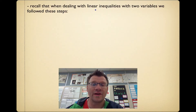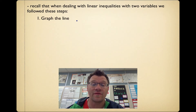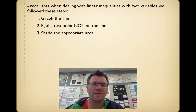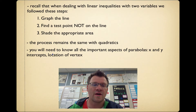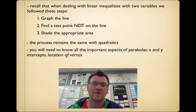Recall that when dealing with linear inequalities with two variables, we followed these steps: first, we graphed the line — in this case, we're going to be graphing the parabola. Second, we find a test point that's not on the parabola. Third, we shade the appropriate area. If the test point makes our inequality true, we shade towards it; if not, we shade away. The process remains the same with quadratics, so you need to know the important aspects of parabolas — x and y intercepts and the location of the vertex.